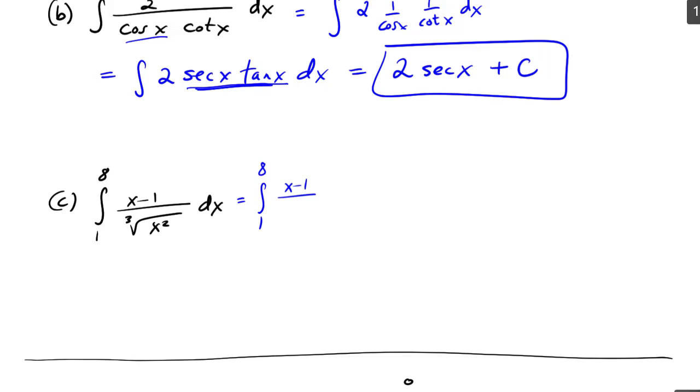All right, so I'm going to rewrite this a bit: 1 to 8, x minus 1 over x to the 2/3 dx. And then I'll have to break this up. x over x to the 2/3 is x to the 1/3, and minus 1 over x to the 2/3 is x to the minus 2/3. Okay, so that's how I've been able to break it up.